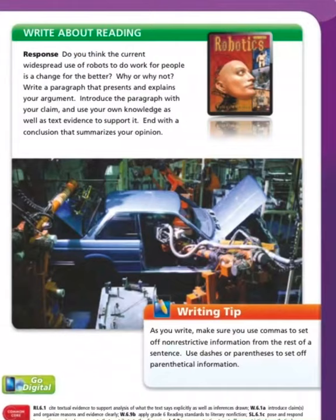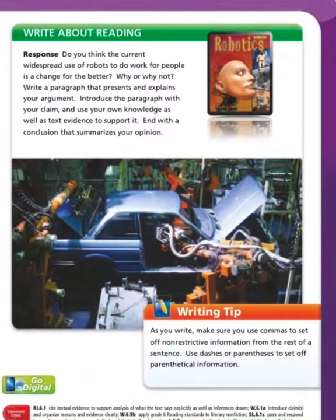Write about reading — response: do you think the current widespread use of robots to do work for people is a change for the better? Why or why not? Write a paragraph that presents and explains your argument. Introduce the paragraph with your claim, and use your own knowledge as well as text evidence to support it. End with a conclusion that summarizes your opinion. Writing tip: use commas to set off non-restrictive information, and use dashes or parentheses to set off parenthetical information.